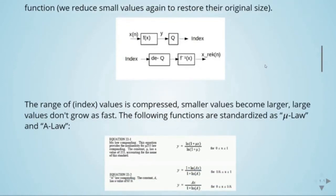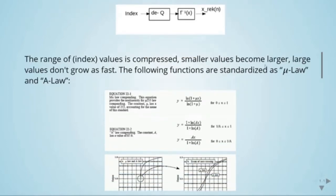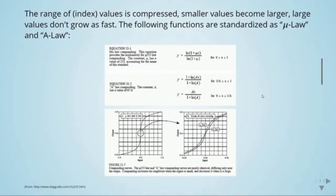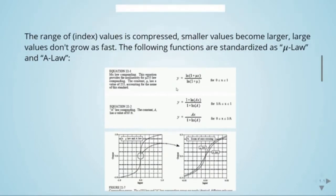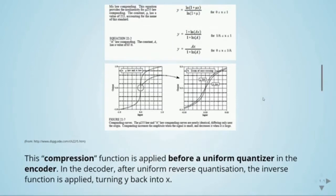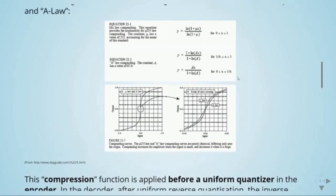We use the standard mu-law and A-law functions for companding. Here is the equation for mu-law companding, and here are the equations for A-law companding. This compression function is applied before the uniform quantizer in the encoder, and after uniform reverse quantization in the decoder, the inverse function is applied to turn y back into x.